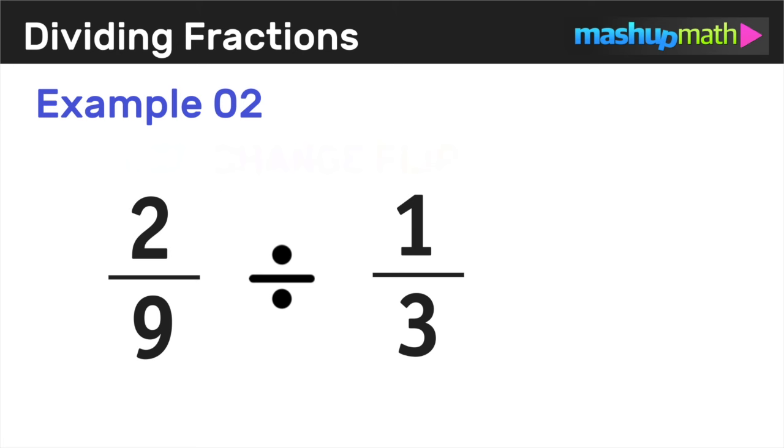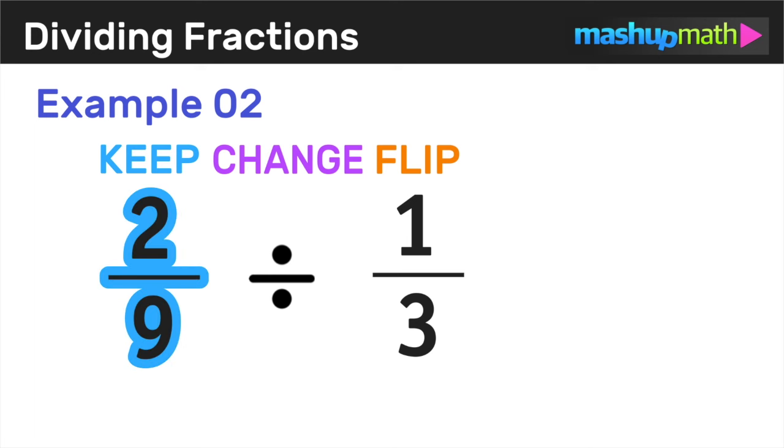We want to find out what is 2 over 9 divided by 1 over 3. And again, we're going to use the keep, change, flip method for dividing fractions. So let's go ahead and keep the first fraction 2 over 9 just as it is.